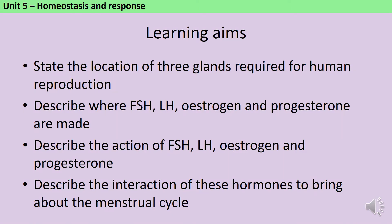By the end of this video, you should be able to state the location of three glands required for human reproduction, describe where each of FSH, LH, oestrogen and progesterone are made, and describe the action of these hormones and how they interact to bring about the menstrual cycle.